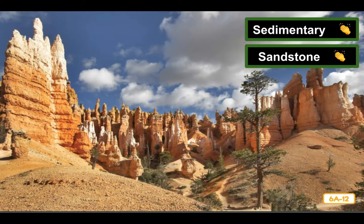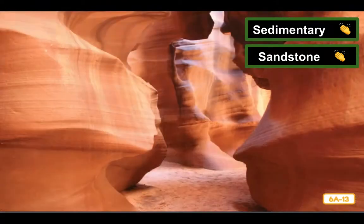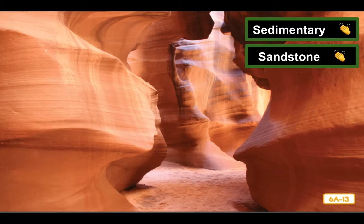Sandstone is one common type of sedimentary rock. Wherever you find sandstone, there is a good chance you are walking in a place that used to be completely underwater. At one time or another, every place on earth has been submerged in water. Sandstone is quite common throughout the world. This photo was taken in Bryce Canyon in the state of Utah, which is known for its unique sandstone formations. Here is another sandstone canyon — Antelope Canyon in Arizona. It is known as a slot canyon, formed over many years as water from rain and flood rushes through the sandstone, causing it to erode.